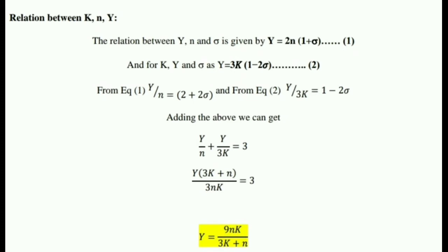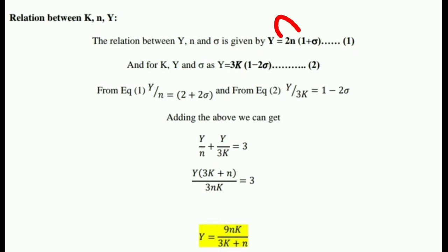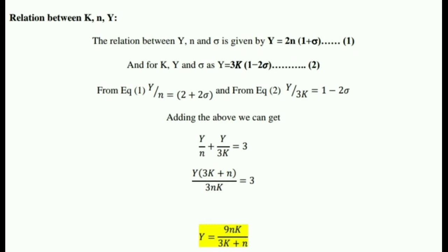We are rearranging the terms. In equation number one, we take N to the other side, giving us y/n = 2(1 + σ), which expands to 2 + 2σ. Similarly, from equation number two we get y/3k = 1 − 2σ. Adding these two rearranged equations: y/n + y/3k = (2 + 2σ) + (1 − 2σ). The 2σ terms cancel, leaving 3.